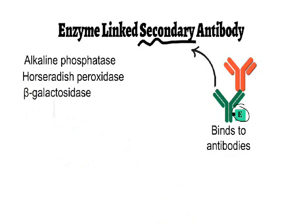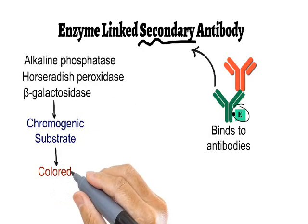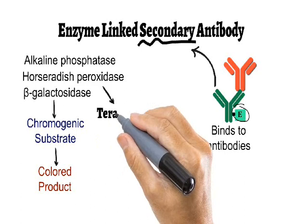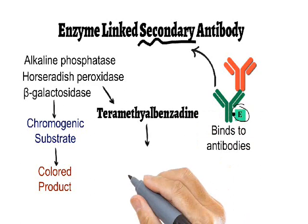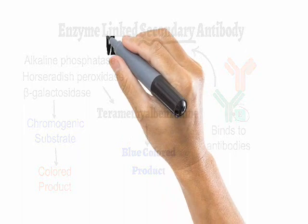horseradish peroxidase, and beta-galactosidase. All these enzymes have a common property: they have a chromogenic substrate, meaning whenever these enzymes act upon their substrate, a colored product is formed. For example, in the case of horseradish peroxidase, it acts on its substrate called tetramethylbenzidine. Whenever horseradish peroxidase acts on this substrate, a blue colored product is formed, which can be easily visualized by eyes, and its concentration can also be detected with the help of a spectrophotometer.